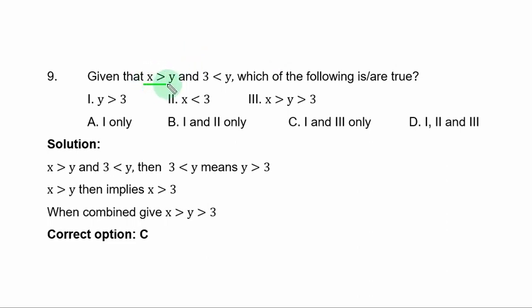Question 9. Given that x is greater than y and 3 is less than y, which of the following is or are true? We have three parts to consider. Looking at the given parts before the options, we can obtain the first parts by interchanging the position of 3 and y in this expression. This is the given expression. So, 3 less than y simply means y is greater than 3. If you interchange the position of 3 and y, the symbol of inequality changes.